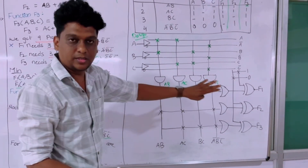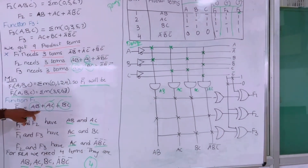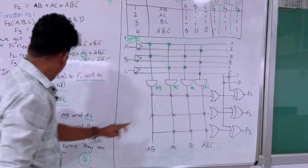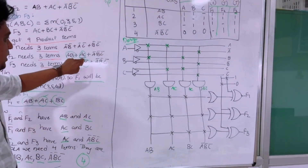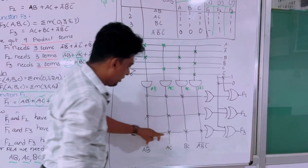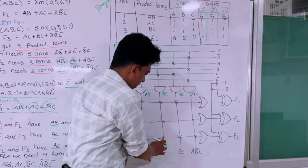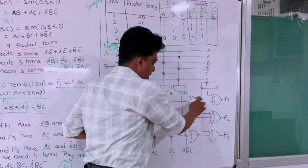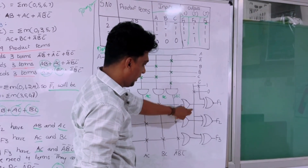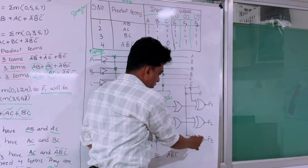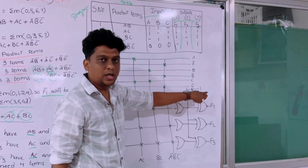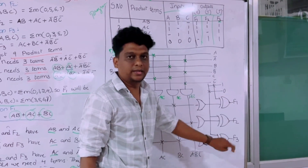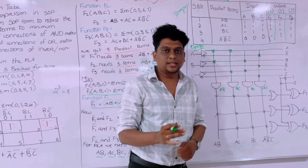Now for the OR array — for F1-bar we mark AB, AC, and BC. For F2, the terms marked are AB, AC, and A-bar B-bar C-bar. For F3, the terms marked are AC, BC, and A-bar B-bar C-bar. We connect these to the OR gate. This function represents F1-bar, F2, and F3. We use logic function 1 to identify direct terms and logic function 0 for complement terms. This is how we design the circuit for PLA.